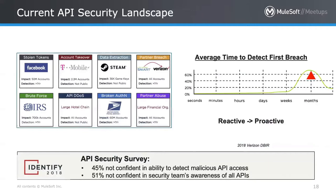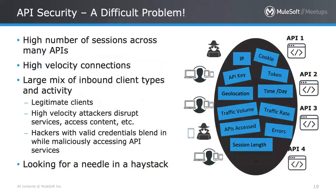Post-mortems of major API breaches reveal two things in common: most attacks come from authenticated users or hackers who reverse-engineered the API, and the average time to detection is staggering. We want to move from reactive to proactive. API security is nearly the perfect dichotomy — as infosec professionals we protect data and systems, but digital transformation means opening APIs to new partners and customers. With credential theft on the rise, finding the needle in the haystack of traffic is a true big data problem.